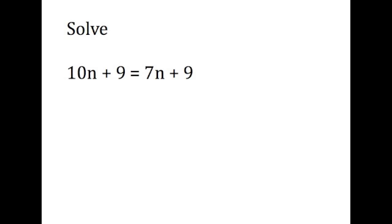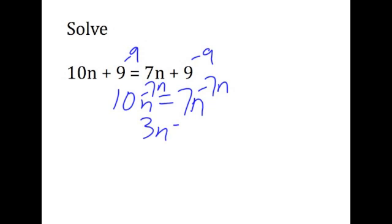The second problem: we're going to subtract 9 from both sides right away and get 10n equals 7n. Many of you thought that meant no solution, but we can also subtract 7n from both sides and get 3n equals 0. We divide both sides by 3, and n is 0. It's the only solution, n equals 0.